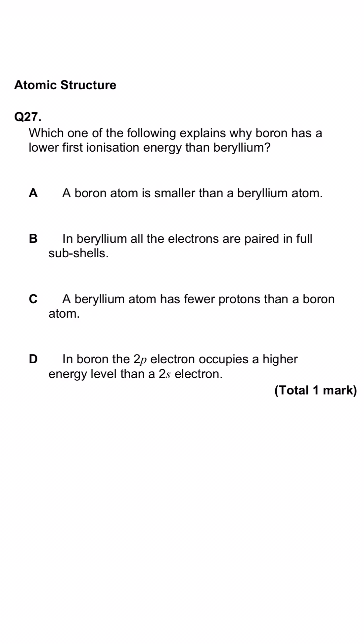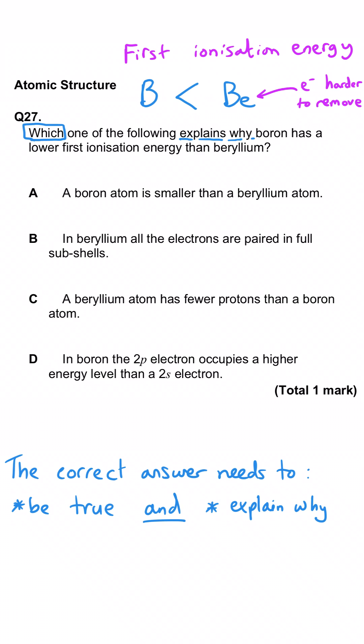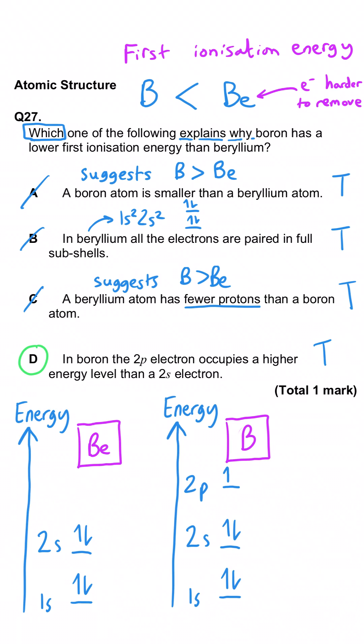This question tells us that boron has a lower first ionization energy than beryllium and it asks us which of these four statements is the explanation why. So three of these are actually true statements but not the reason why so that makes this question quite tricky. Boron is a smaller atom than a beryllium atom. True but that would actually give boron a higher first ionization energy. Beryllium does only have paired electrons in its full subshells and that's true but not the reason. Beryllium has fewer protons than a boron atom. That's true but you'd therefore expect boron to have a higher first ionization energy. So D has to be the correct answer and that's because boron's outer electrons are in a P subshell which have got a higher energy than 2s.